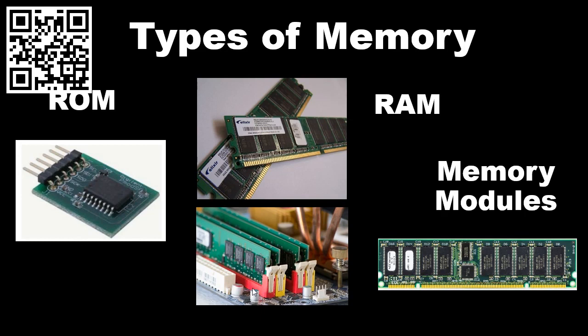Remember, there are four different types of RAM memory: we have DRAM, SRAM, CMOS RAM, and VRAM.